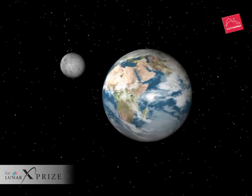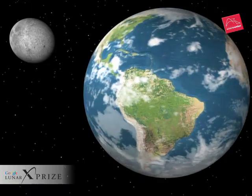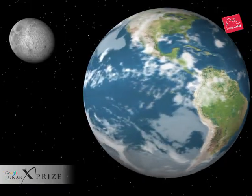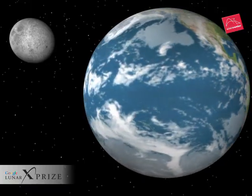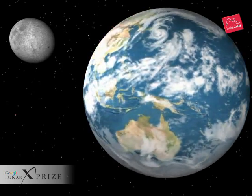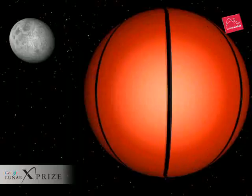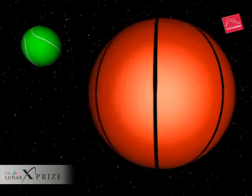How big is the Moon compared with the Earth? You probably have two objects at home that are almost exactly the proper Earth-Moon scale. The Moon's diameter is 27% that of the Earth. If you use a regulation basketball to represent the Earth, the Moon is about the size of a tennis ball.